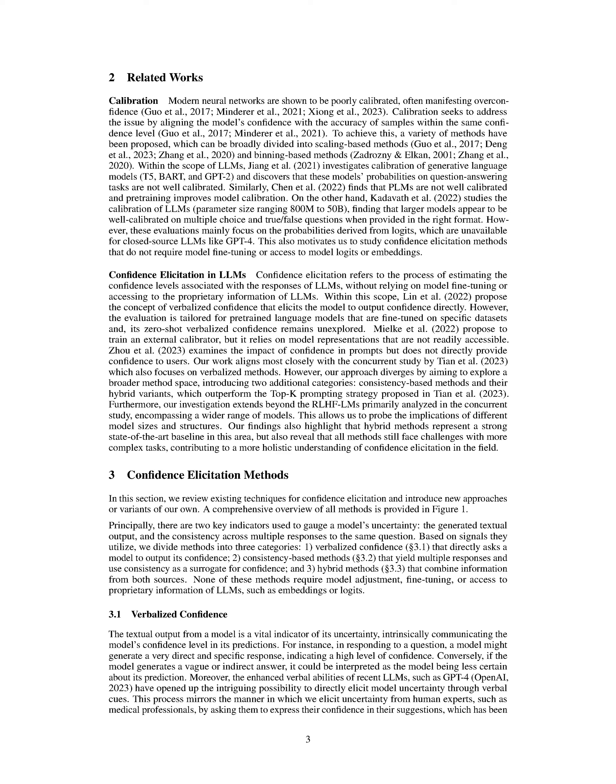In Section 3 on confidence elicitation methods, we take a closer look at various methods for eliciting confidence from models. Generally, we use two main indicators to evaluate a model's uncertainty: the textual response it generates and the uniformity of multiple responses to the same query. Based on these signals, we've grouped the methods into three categories: (1) verbalized confidence, which directly prompts the model to indicate its confidence level; (2) consistency-based methods, which generate several responses and interpret their uniformity as an indicator of confidence; and (3) hybrid methods, which pull together data from both sources. Importantly, none of these methods require tweaking the model or needing proprietary data like embeddings or logits.